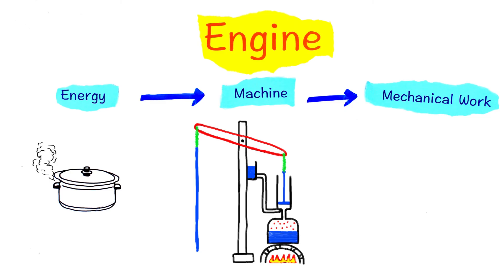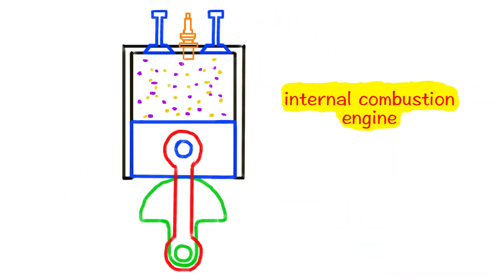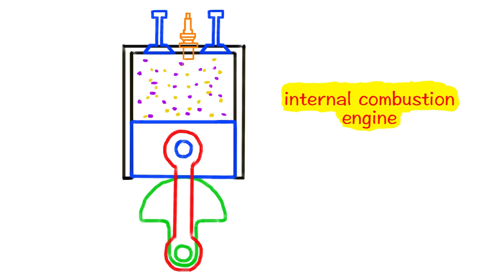But they still have some disadvantages. They are bulky, for example. You need to have a separate boiler to produce steam, then you have to transfer the resulting steam to the engine, which is not very efficient. And moreover, steam engines can be dangerous. In order to overcome these disadvantages, scientists and engineers designed and built the next generation of engines: the internal combustion engine. But we will leave that to the next lesson.